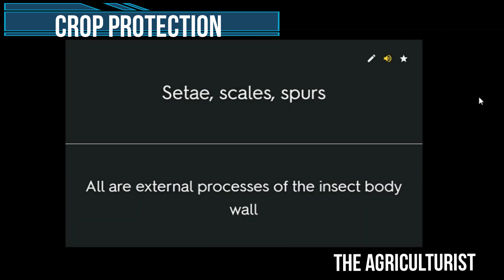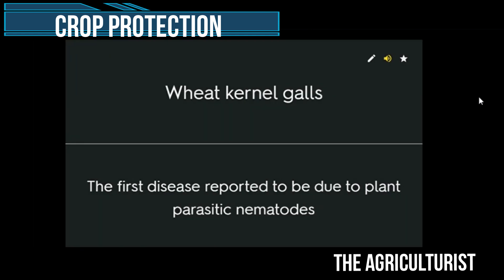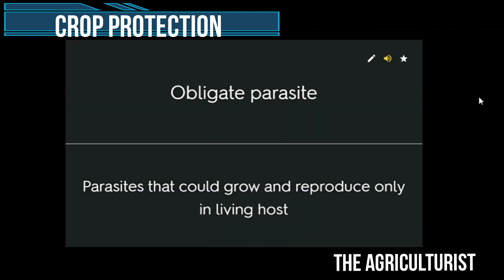Setae, scales, spurs — all are external processes of the insect body wall. Wheat kernel galls — the first disease reported to be due to plant parasitic nematodes. Obligate parasite — parasites that could grow and reproduce only in a living host.